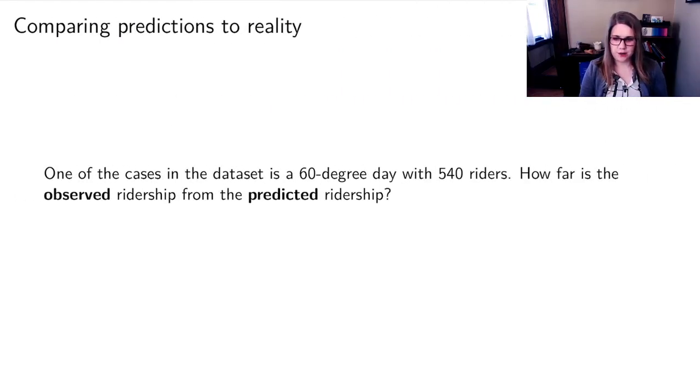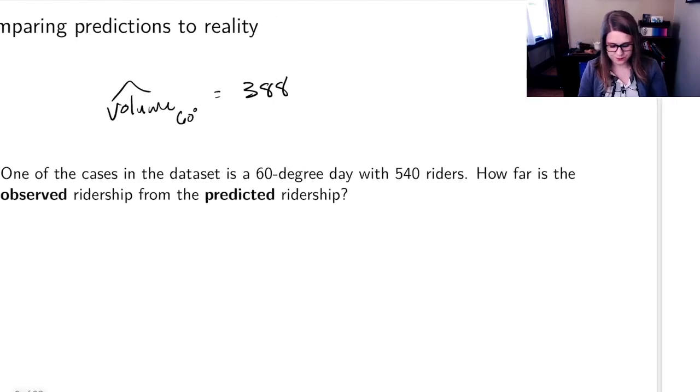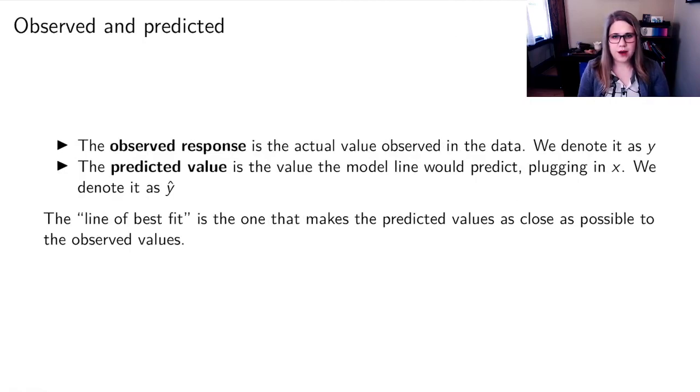So we've made a prediction for a 60 degree day, and I had a volume hat for 60 degrees, we said that it was 388, that was our predicted number of riders. But one of the cases in my data set is a day where it was 60 degrees, and we actually saw 540 riders. And then the question is, how far is that observed ridership from the predicted ridership? It's a little bit different, right? 388 is less than 400, 540, that's quite a bit higher. So it doesn't feel like we did the very best job of making the prediction for that particular point.